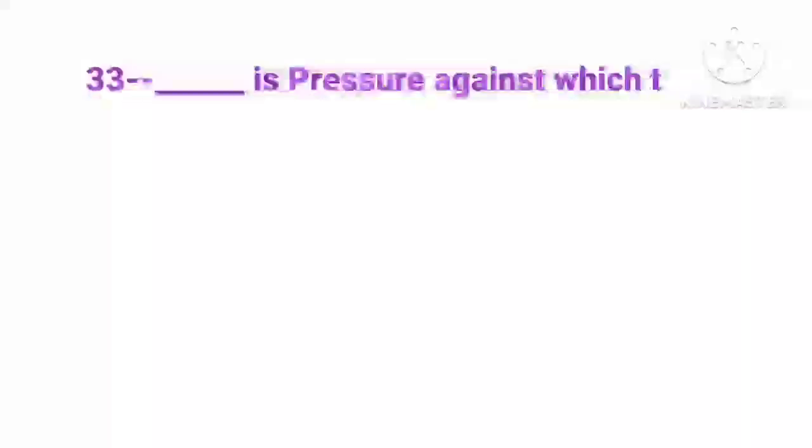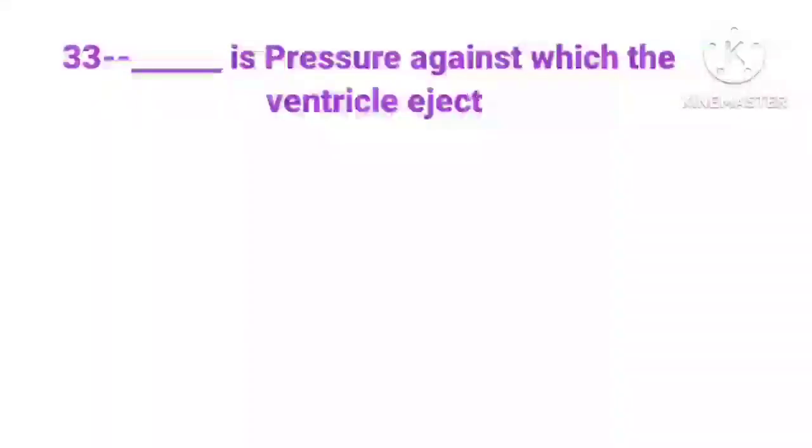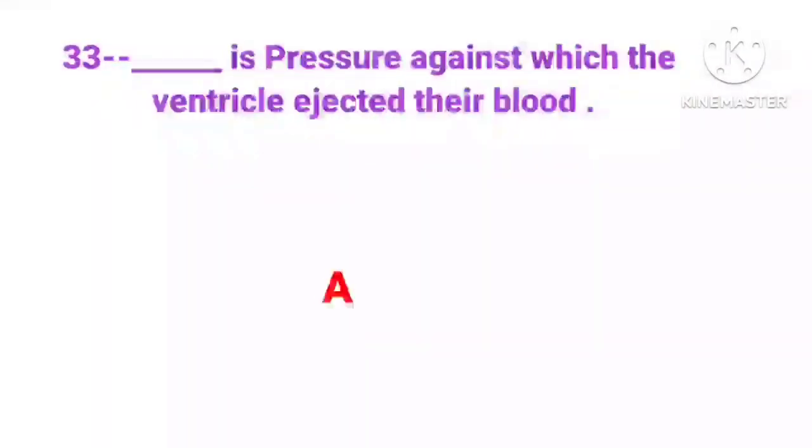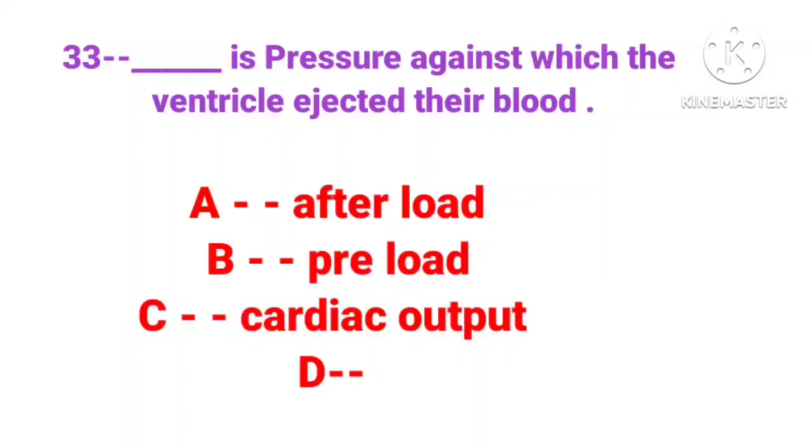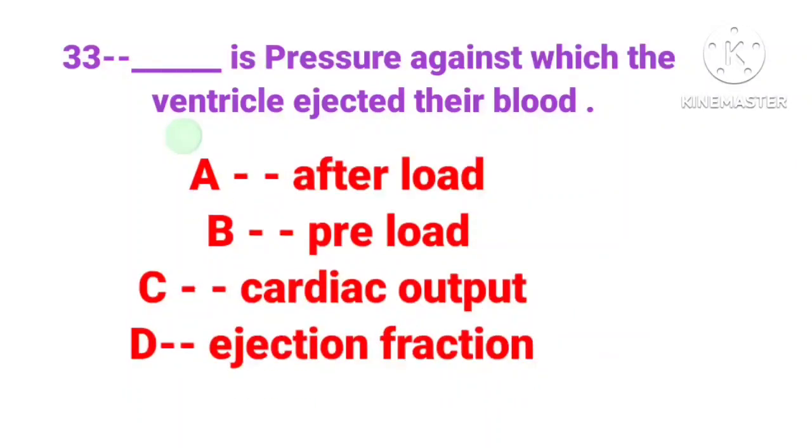Question number 33: Dash is pressure against which the ventricle ejected their blood. Option A: afterload, B: preload, C: cardiac output, D: ejection fraction. Correct answer is Option A: afterload.